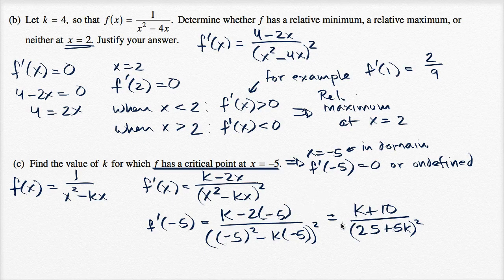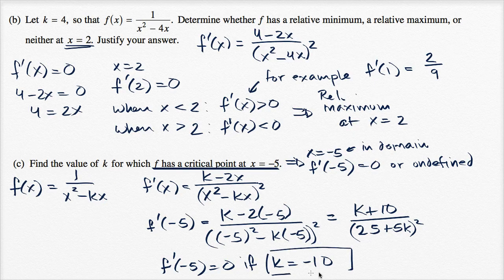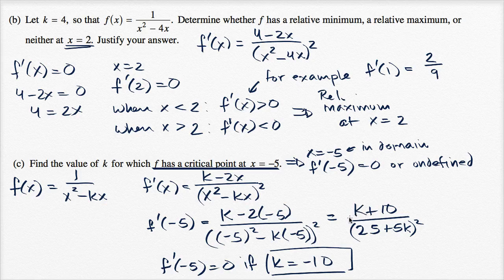What value of k makes f'(-5) equal to zero? f'(-5) is equal to zero if k is equal to negative ten. So that's the value of k for which f has a critical point at negative five — it makes the numerator equal to zero, and therefore makes the whole derivative equal to zero.